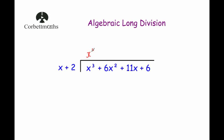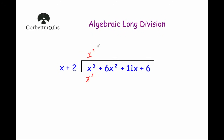Now we're going to multiply both terms of the divisor — the x and the 2 — by x squared and write it beneath the polynomial. So x squared times x is x cubed, and x squared times 2 is plus 2x squared. Now we've done our multiplication, we're going to subtract x cubed plus 2x squared away from the original polynomial.